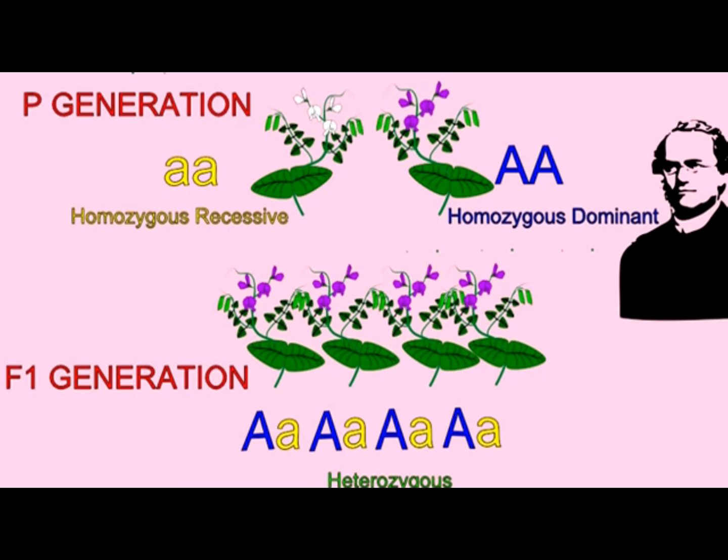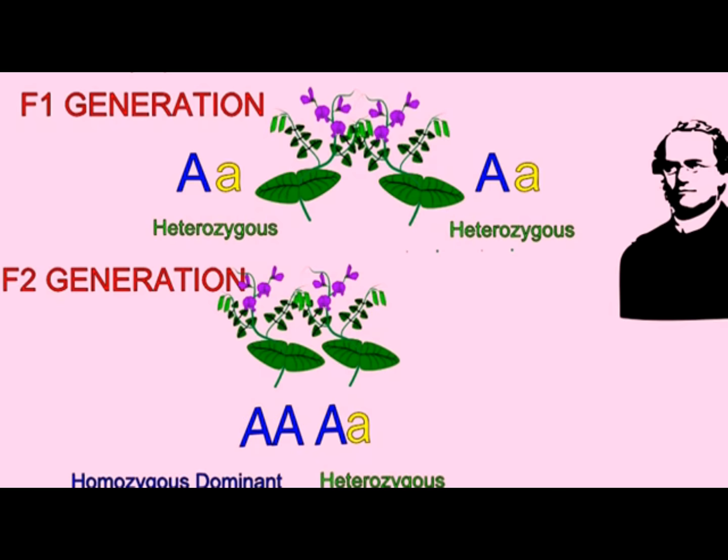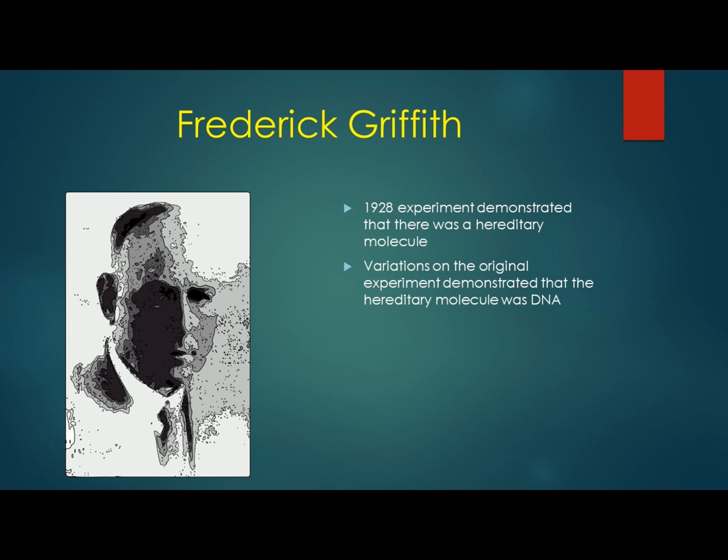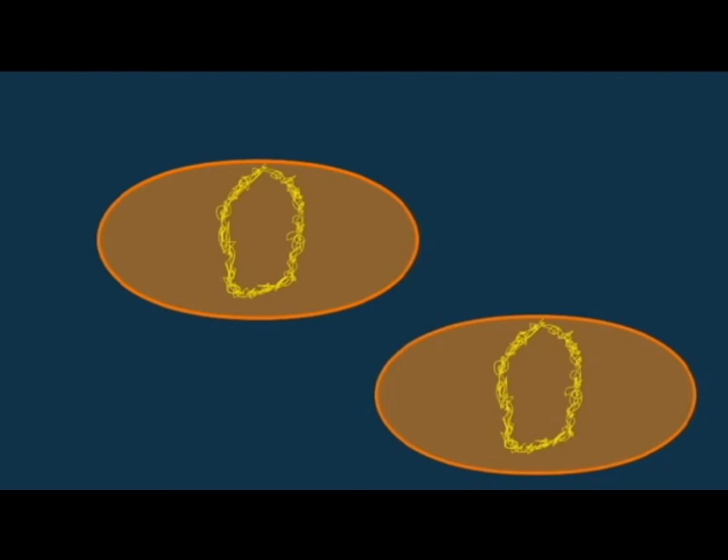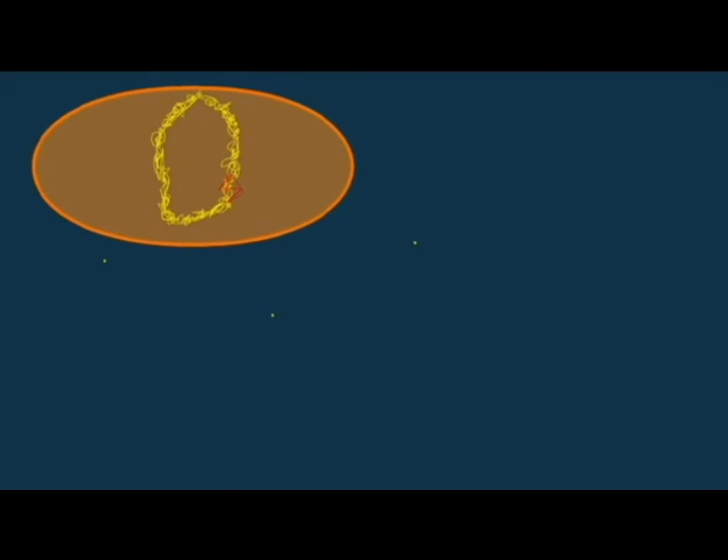Gregor Mendel performed experiments about the time of Darwin, which would have answered many of his questions, but Mendel's work was largely unappreciated until the early 1900s. In 1928, Griffith demonstrated that there was a physical molecule which was the agent of heredity. In other words, genetic information was passed down by a physical something that physically moved between cells. And later variations on his experiment demonstrated that it was DNA.